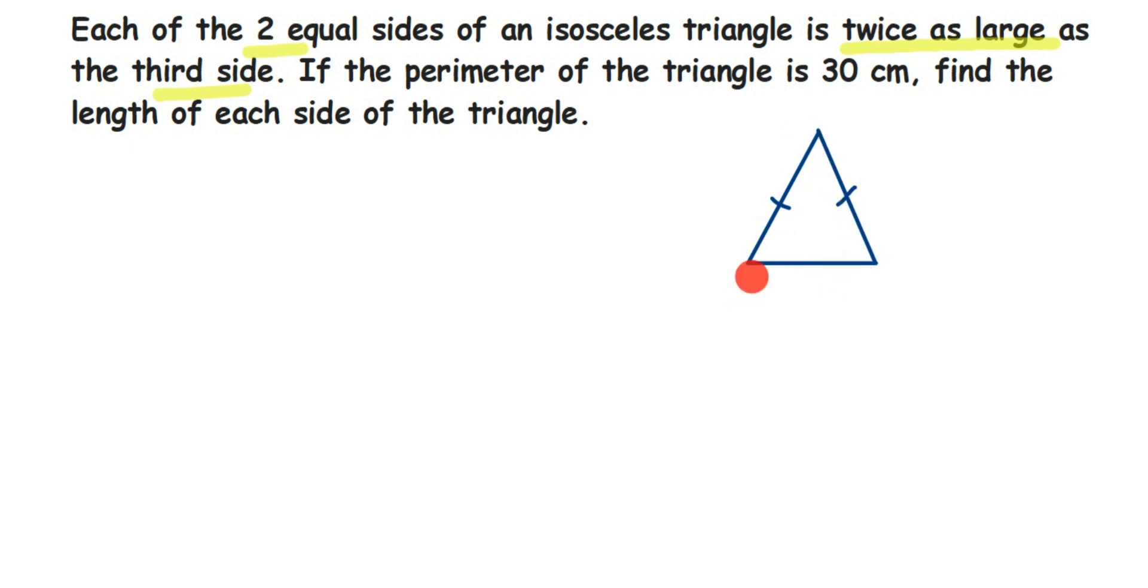Now since we don't know this third side, we are going to assume the third side to be equal to x. So let the third side be equal to x. Third side of the isosceles triangle is equal to x.